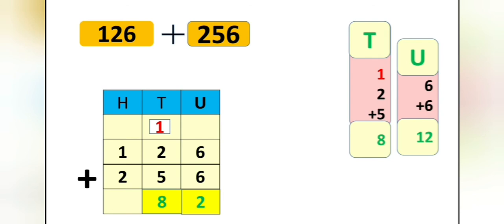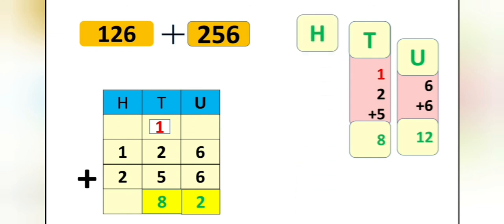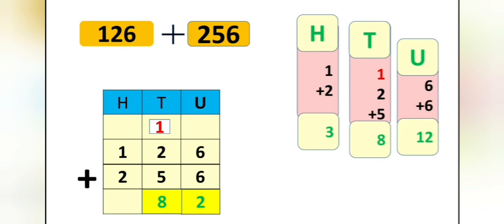As it is 8 tens. Now let us add the hundreds place. In the hundreds place, we have 100 and 200. So let us add these numbers: 1 plus 2 is equal to 3. So we will write 3 in the hundreds place.